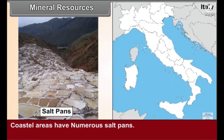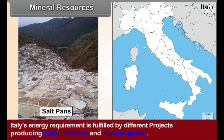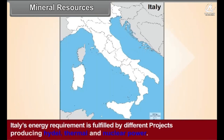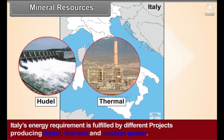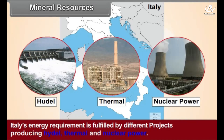Natural gas found in the Po River Basin is supplied through pipes to the urban areas in the plains. Coastal areas have numerous salt pans. Italy's energy requirements are fulfilled by different projects producing hydroelectric, thermal, and nuclear power.